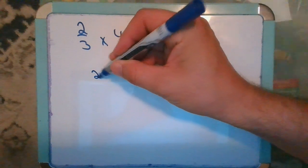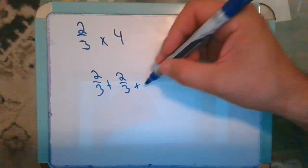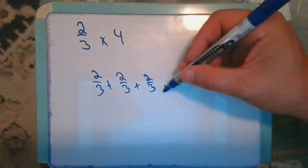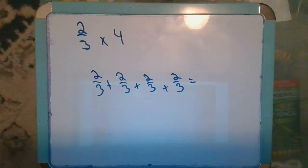So that would be two-thirds plus two-thirds plus two-thirds plus two-thirds. That's four groups of two-thirds. That's the repeated addition.